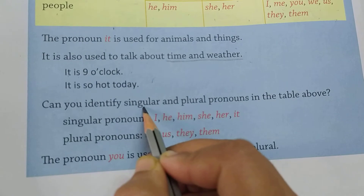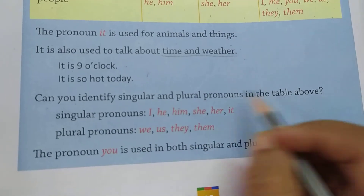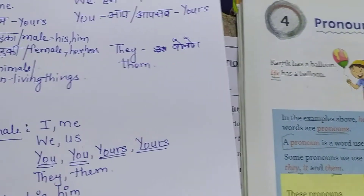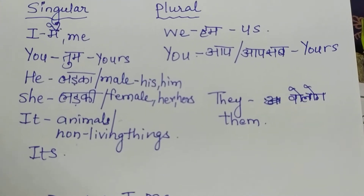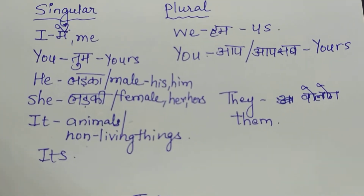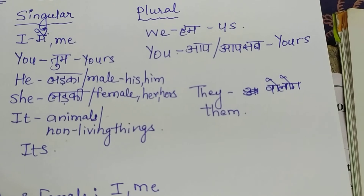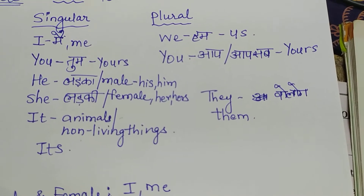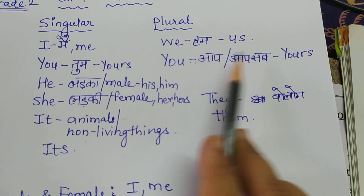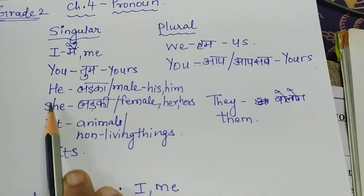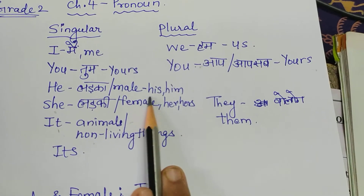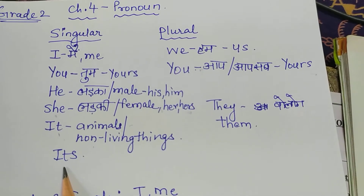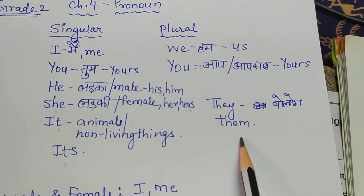Can you identify the singular and plural pronouns in the table above? I is singular. Me is singular. We is plural. Us is plural. You and yours — singular. You and yours — plural. He, she, it — singular. His, him, her, hers — singular. It — singular. They and them — plural.